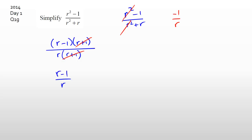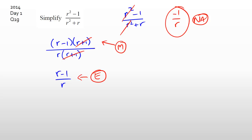If you see this question in the exam, just be thankful — it's the easiest excellence question you're going to get, because getting to that final answer right there is excellence. If you had just cancelled the r squareds, that's not even achieved. For merit, you need to factorize both the top and the bottom. For achieved, if you had just factorized one of them — either the top or the bottom — you would get an achieved grade.